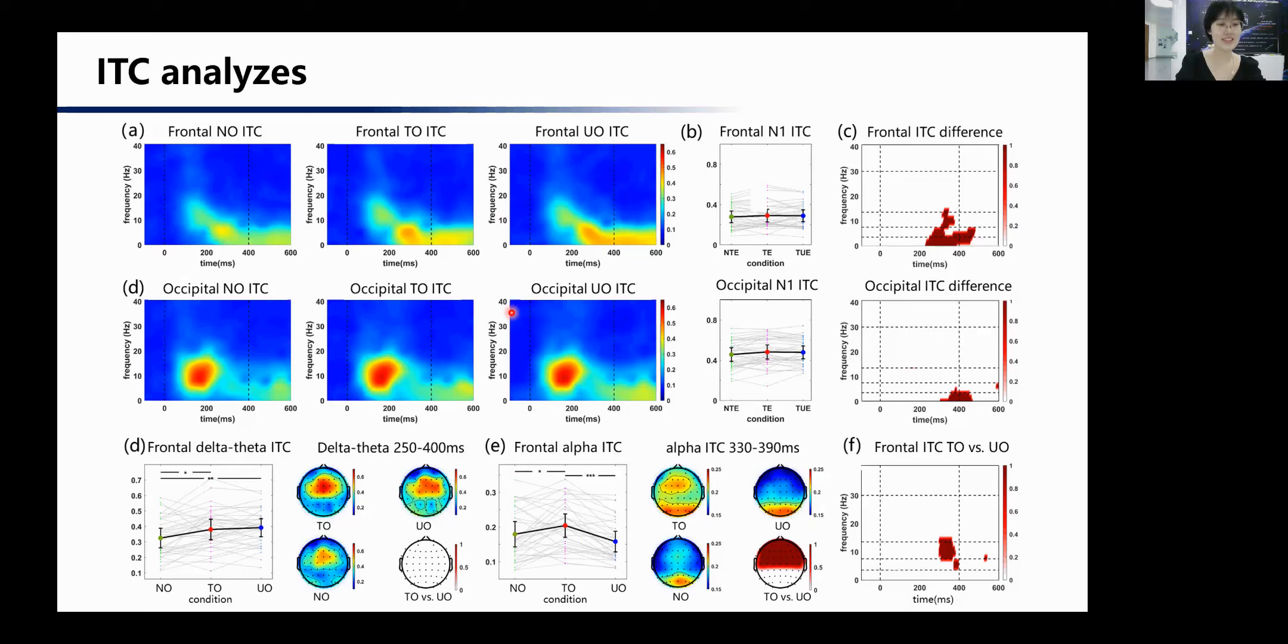In ITC analysis, after the N1 coherence induced by the first flash, ITC differences among the three conditions began to emerge and mainly located in the frontal central area. Compared to NO conditions, the precise temporal orienting led to ITC enhancement in the delta and theta frequency bands. Moreover, the TO conditions had the largest ITC in alpha frequency bands. That indicates the alpha ITC can be enhanced significantly before the orientated moment.